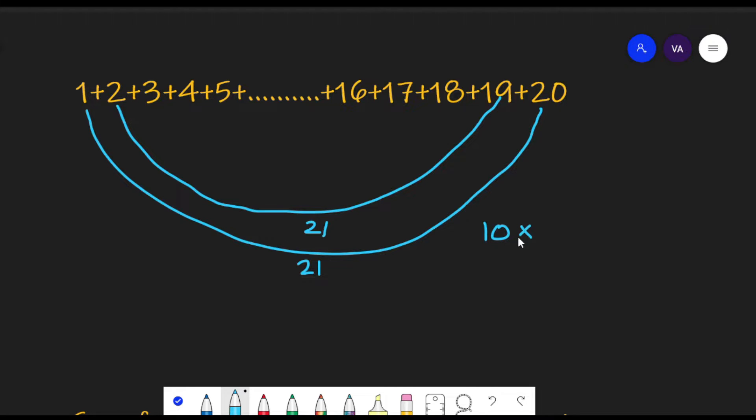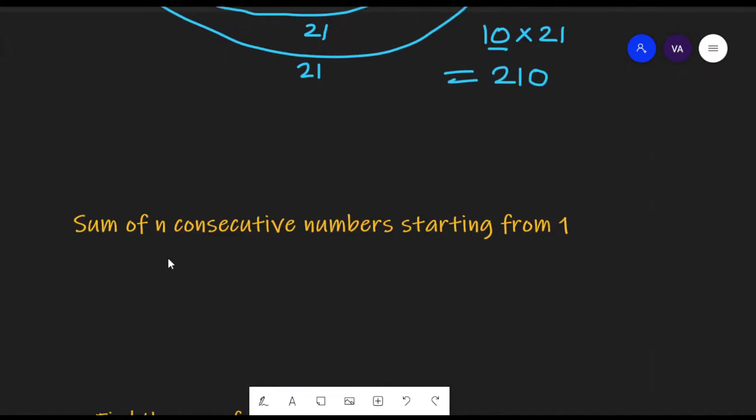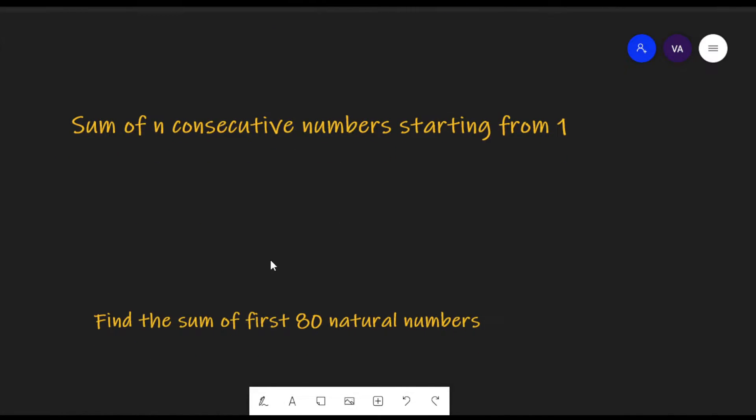And each pair will have sum equal to 21. So 10 into 21 is equal to 210. So without actually adding the numbers, we can easily find the sum of any length of numbers. Like 1 to 100, 1000 and many more.